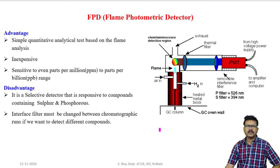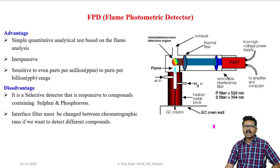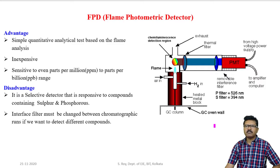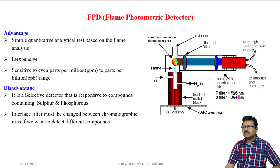Advantages of flame photometric detector: it is very simple, gives quantitative analytical test based on flame analysis, is inexpensive, and sensitivity is very high — even in parts per million to parts per billion range. Disadvantages: it is very selective to phosphorus and sulfur only. Another disadvantage is that the interference filter must be changed between chromatographic runs if we want to detect different compounds — when detecting sulfur a corresponding filter is used, and for phosphorus, the filter must be changed to allow 526 nanometer light energy.